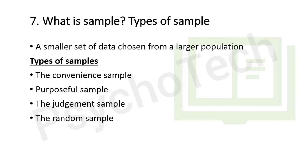The third type is a judgment sample, where the research population is obtained according to the discretion of someone who is familiar with the research population's relevant characteristics. The fourth and last type is a random sample, in which a sample is chosen at random from the research population using a recognized method. Subtypes of random samples include simple random sample, systematic random sample, stratified sample, and cluster sample.